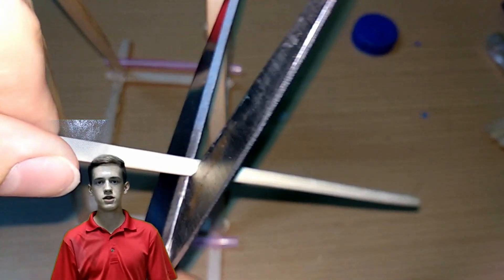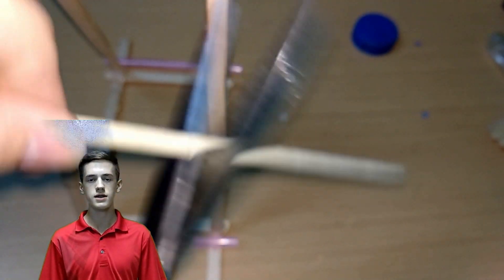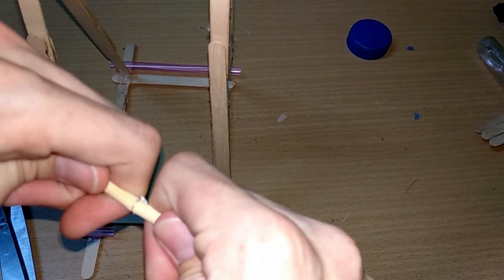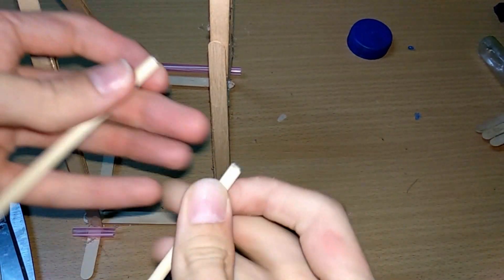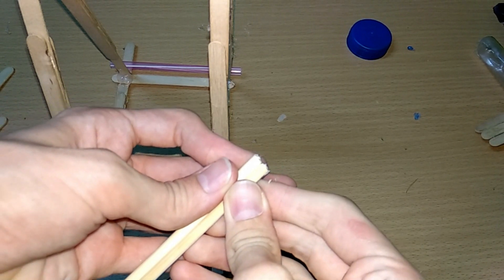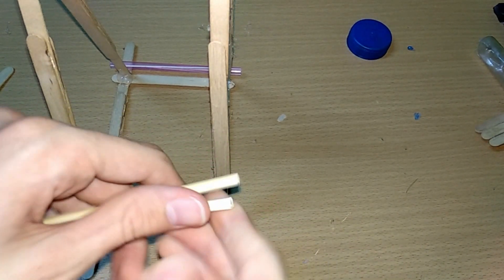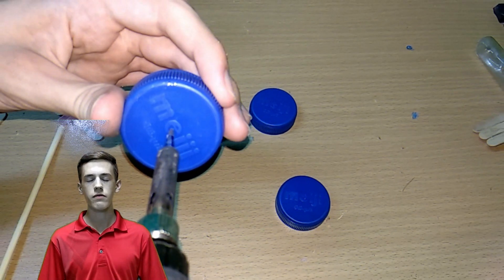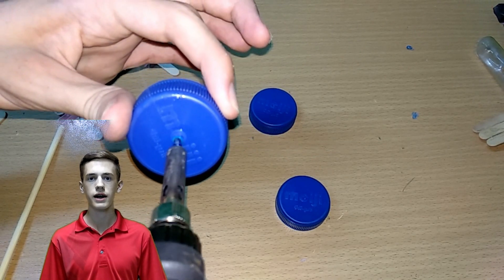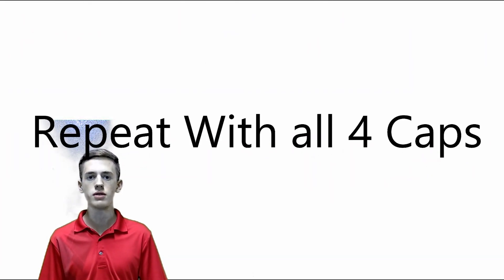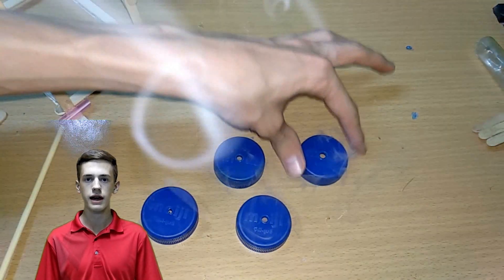Now cut two chopsticks down to six inches long. Then using a soldering iron or a knife, cut or burn a hole into the center of four bottle caps.